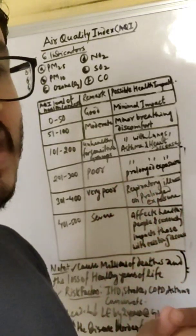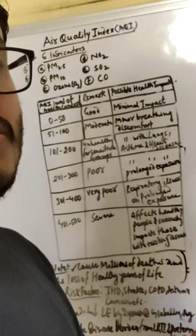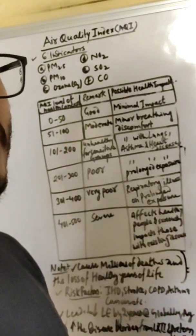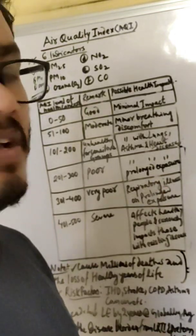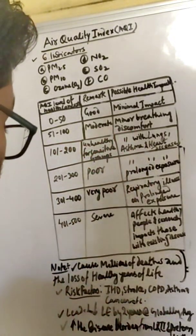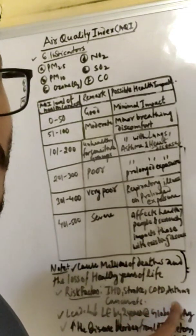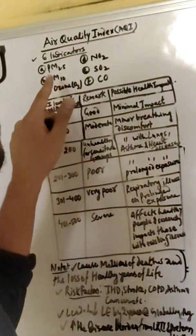If you inhale it, it leads to the alveoli. Alveoli is the smallest unit of lungs. It will create problems such as respiratory disorders, including asthma, COPD, emphysema, and stroke. It also leads to coronary obstructive pulmonary disorder. These are the complications that occur with PM2.5.